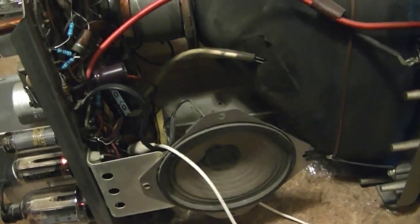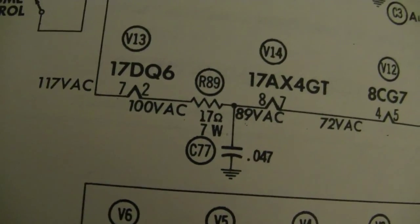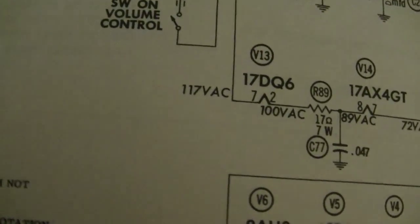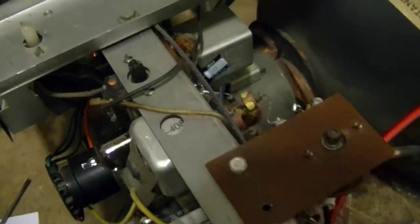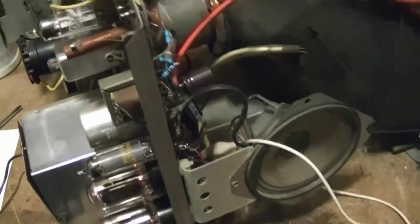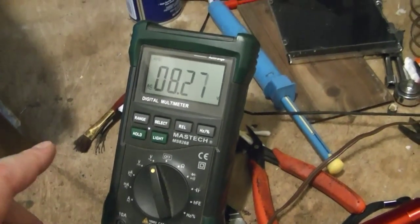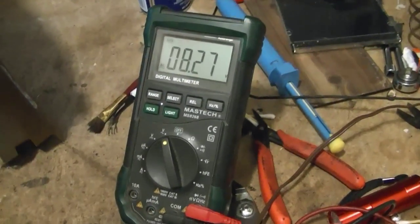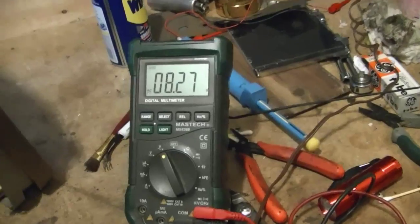There's a 17-ohm dropping resistor in this set to make up for the fact that the tube filaments don't add up to 117 volts AC. For a refresher, here's a look at the schematic. So here's all the tube filaments wired in series, and there's a 17-ohm 7-watt resistor they threw in there. I have hooked up my AC voltmeter across that resistor, and I'm getting 8.27 volts AC. And I've measured the resistor, and it is pretty close to 17 ohms.